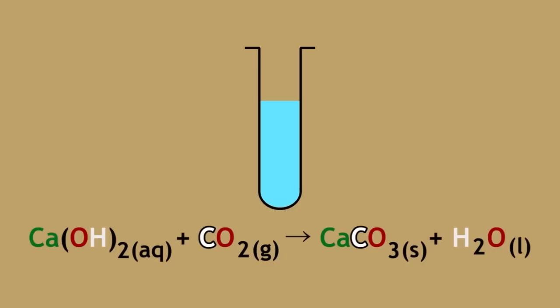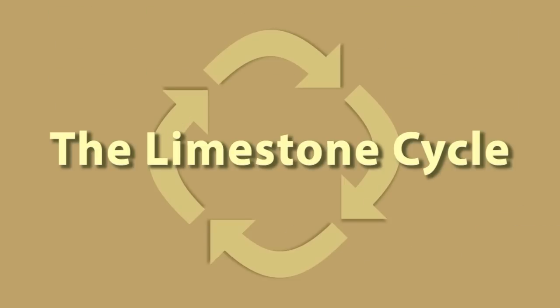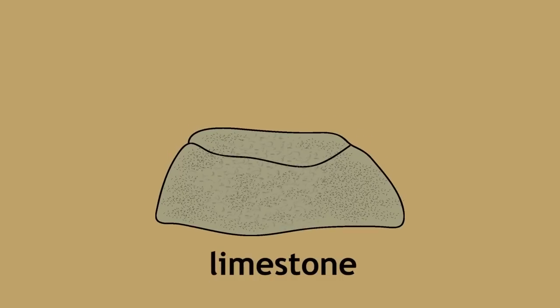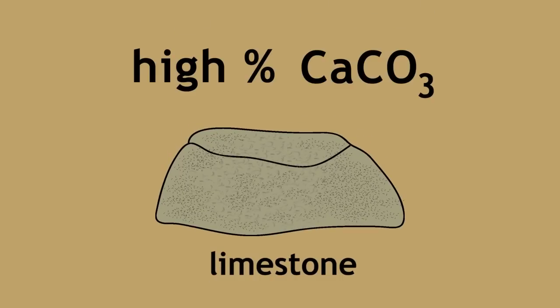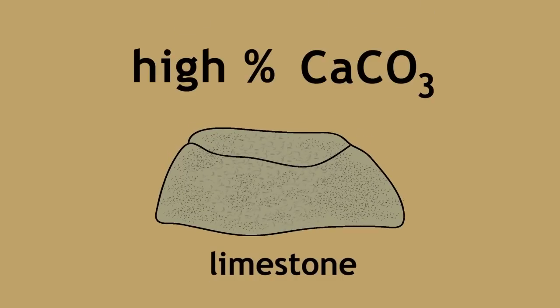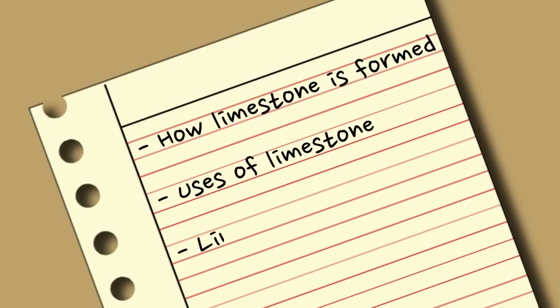This reaction is in fact a part of a much bigger cycle called the limestone cycle. Limestone is a type of sedimentary rock with a high percentage of calcium carbonate. In this lesson, we will learn about how limestone is formed, some uses of limestone, and the limestone cycle.